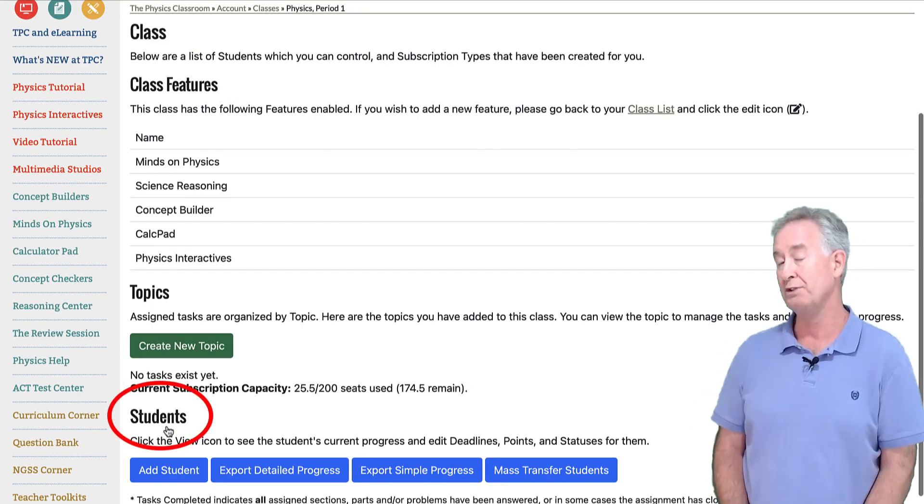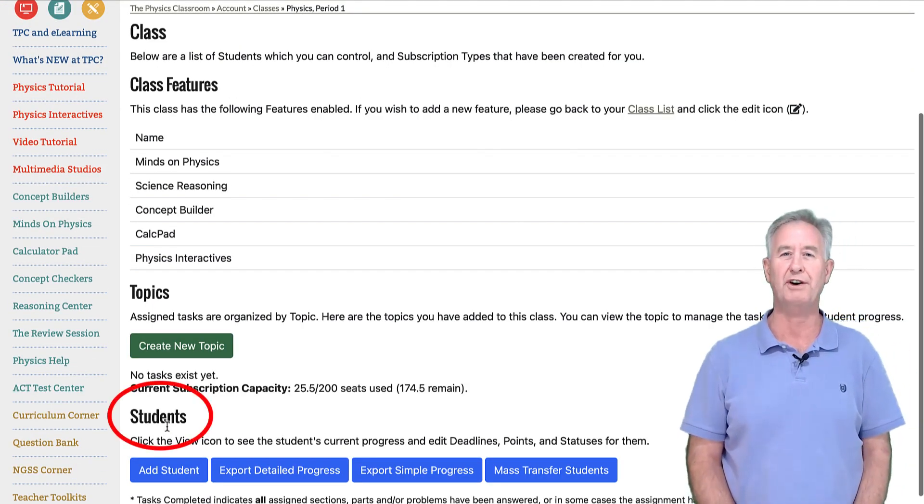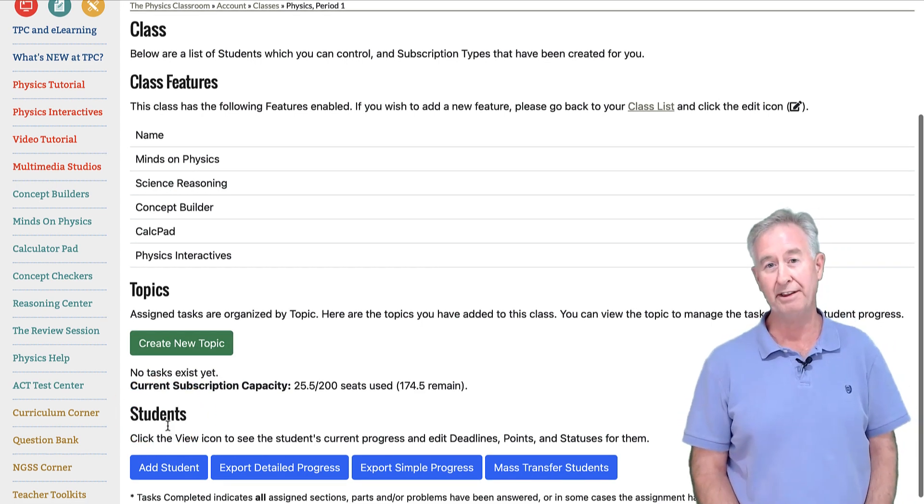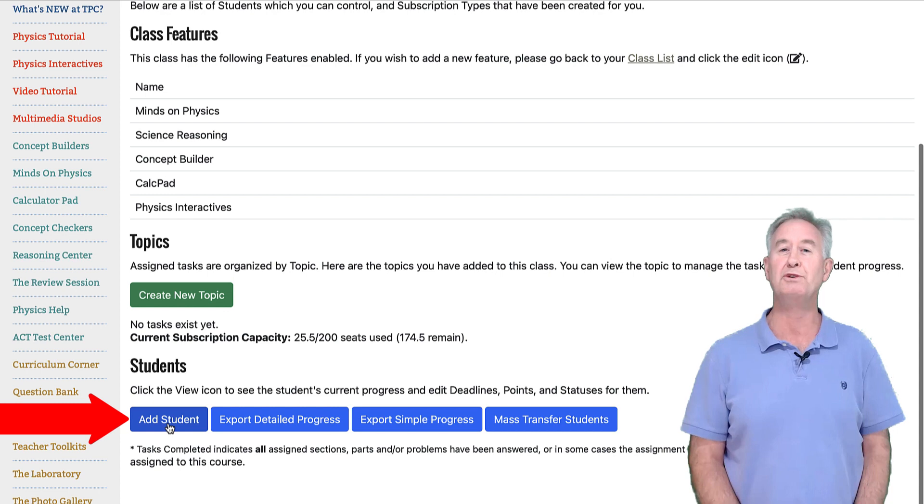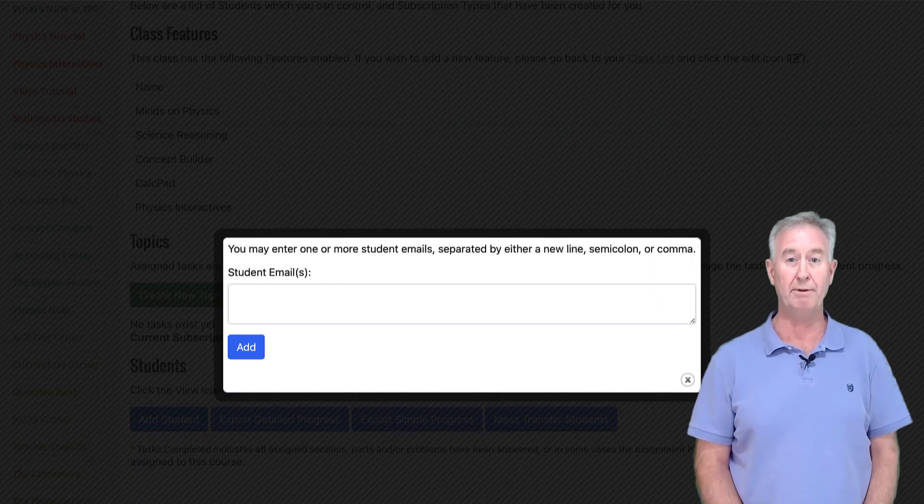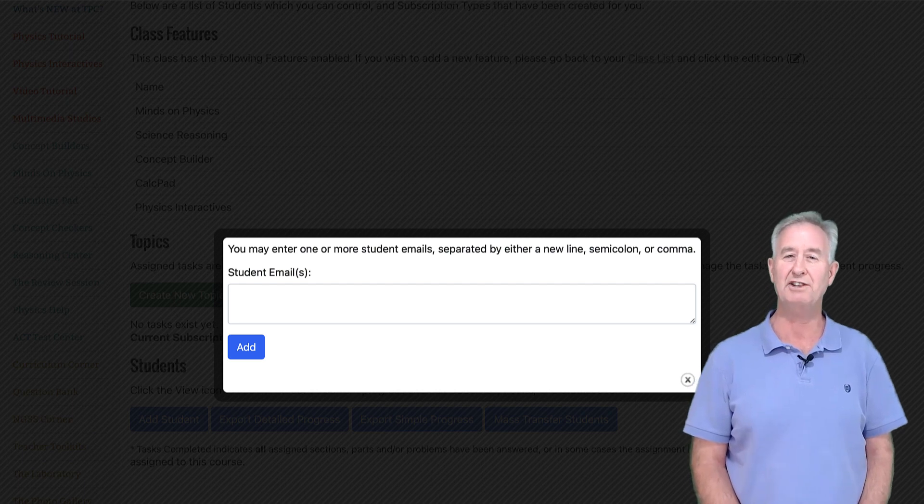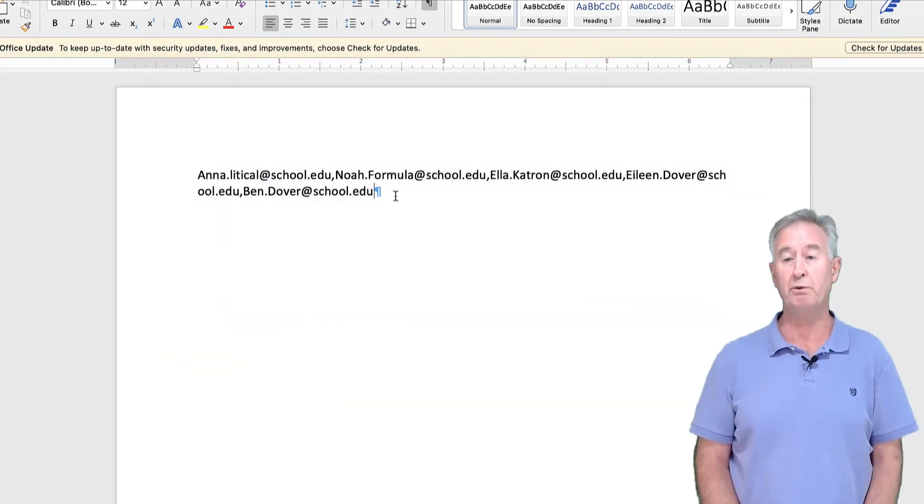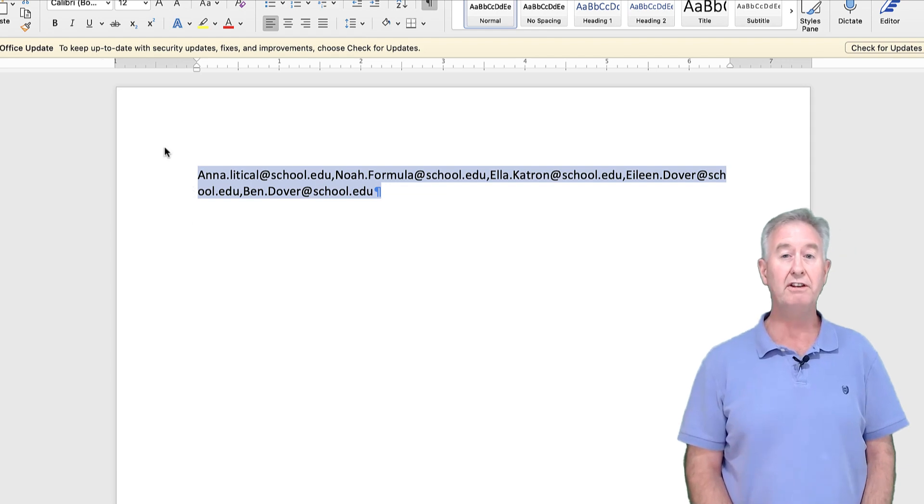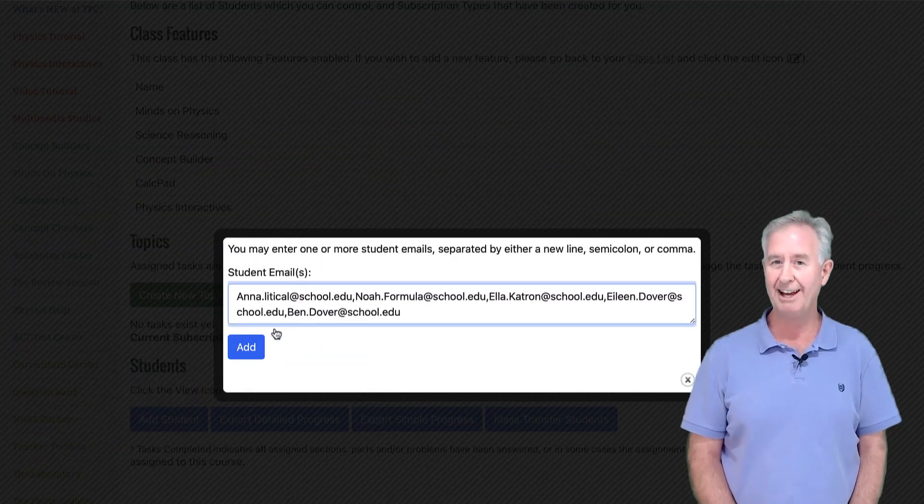You'll notice there's a section called students where we list your roster. You currently don't have students but there's an add students button. If you tap on the add students button, a field pops up for you to enter email addresses for all the students in your class. I like to enter this information in Microsoft Word, copy and paste it into the field and then tap on the add button.